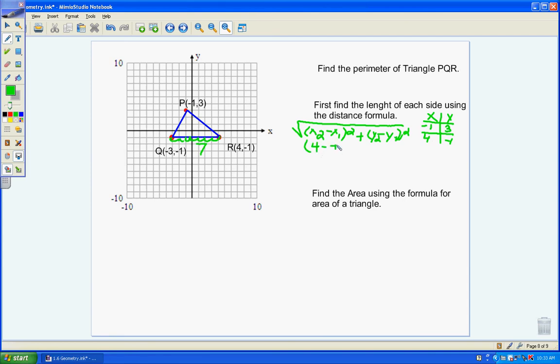4 minus negative 1 squared plus negative 1 minus 3 squared. So I get 5 squared, which is 25, plus negative 4 squared, which is 16. So now I have to find the square root of 41, which is approximately 6.5. So the length of this side is 6.5.